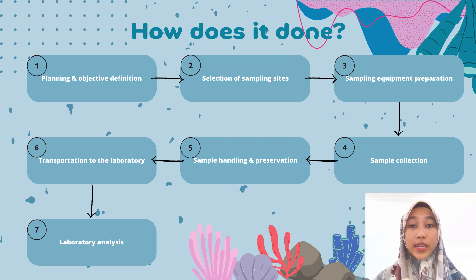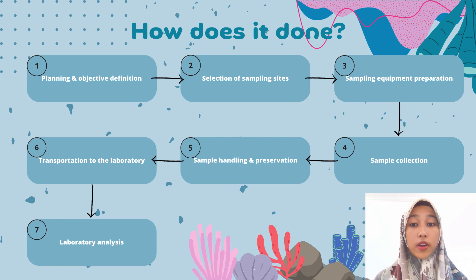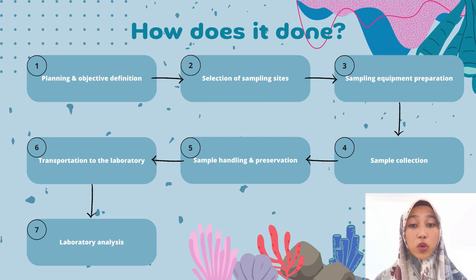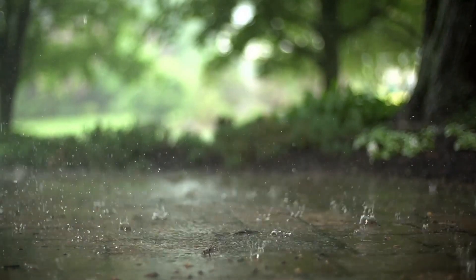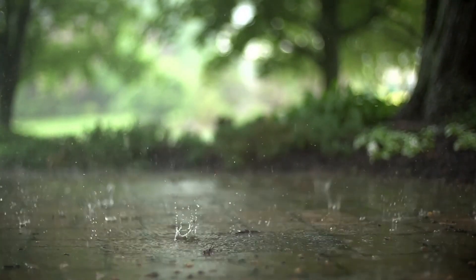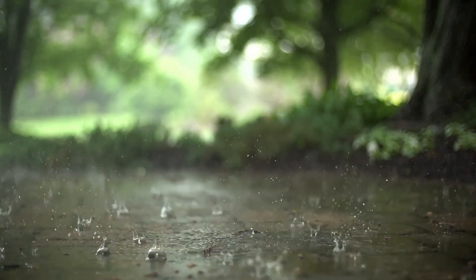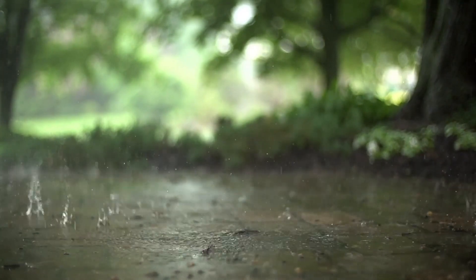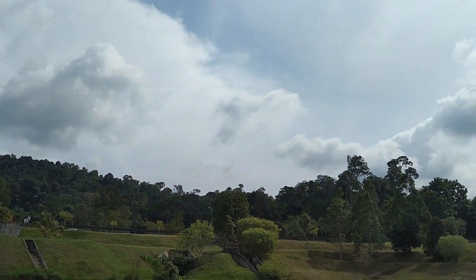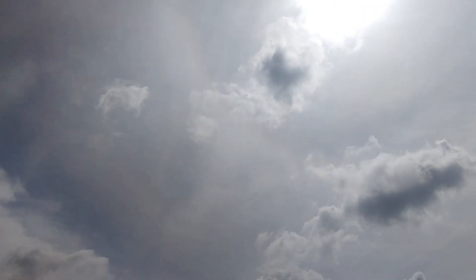Next is the selection of sampling sites. Selecting appropriate sampling sites is critical to ensure that the collected samples are representative of the water body. Factors like flow patterns, depth, proximity to potential pollution sources, and accessibility are considered when choosing sampling locations. Don't forget to record the weather — if it's raining, you may want to consider additional steps including safety, potential dilution, and runoff contamination, or you may simply come back another day when the weather is nice.